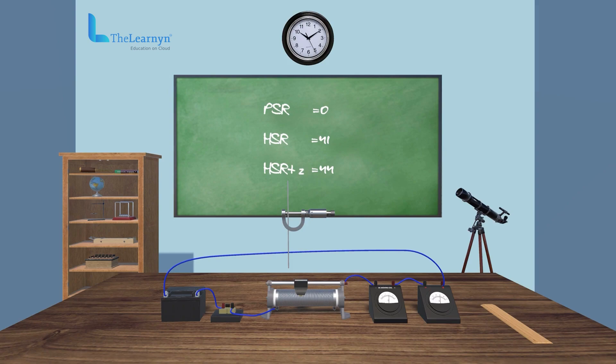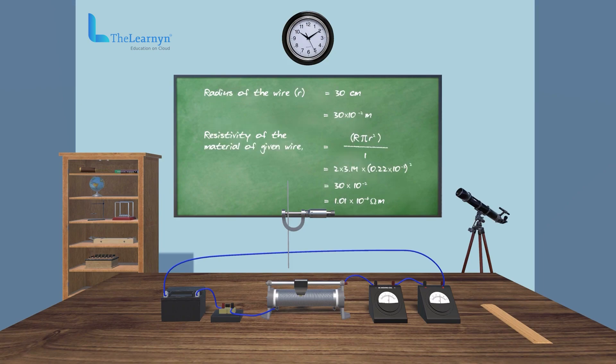Let's calculate the diameter of the wire and hence radius of wire. With this information, we can calculate the resistivity, specific resistance, of the material of the wire.